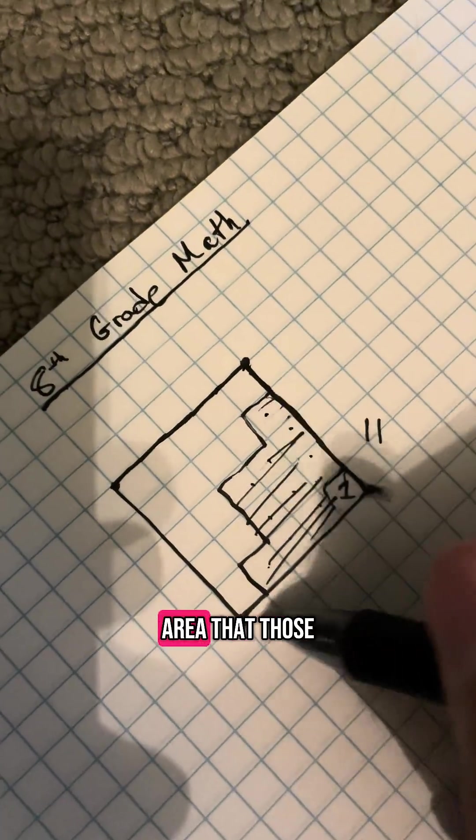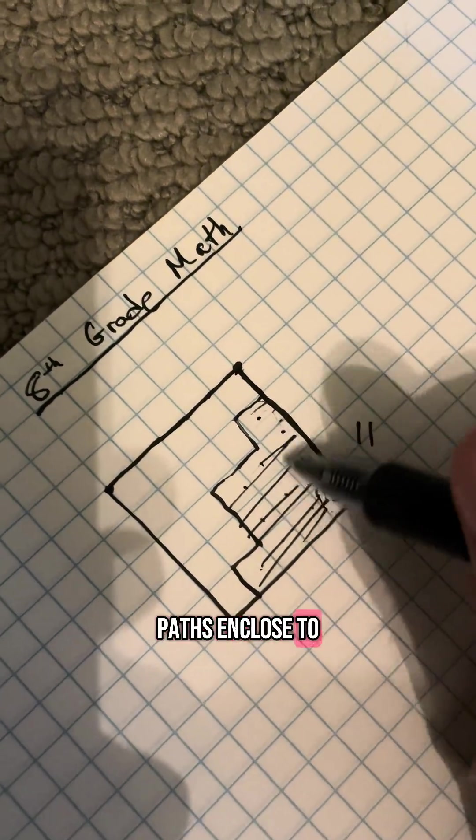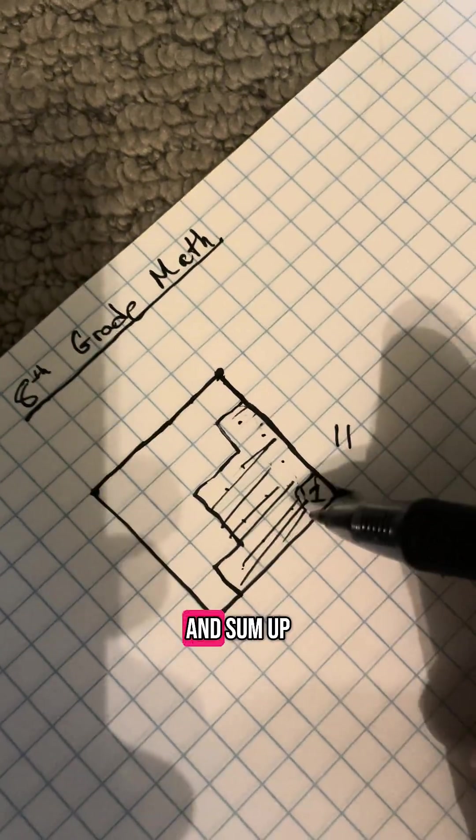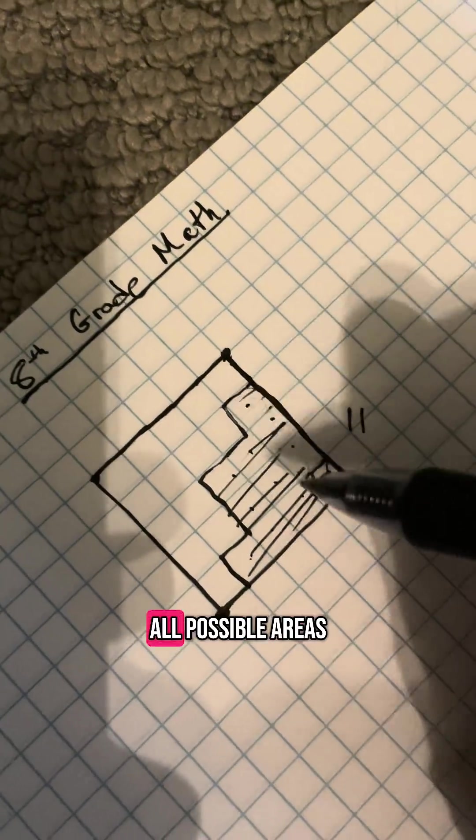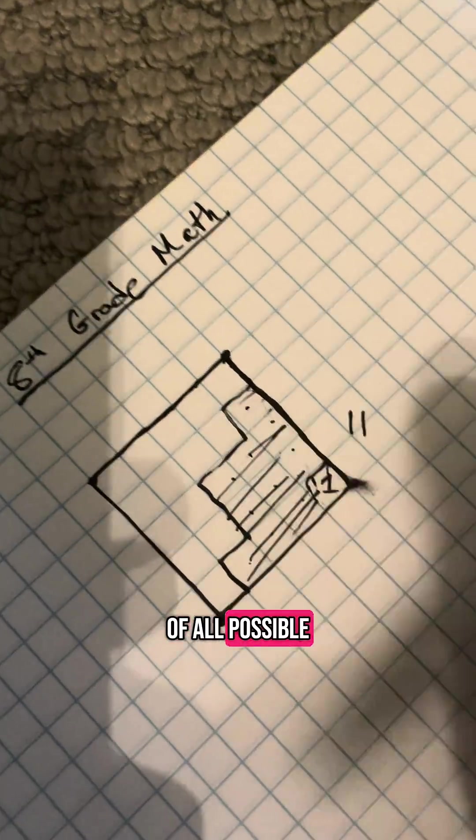then take the area that those paths enclose to the right of the path and sum up all of those areas. What is the total sum of all possible areas of all possible paths?